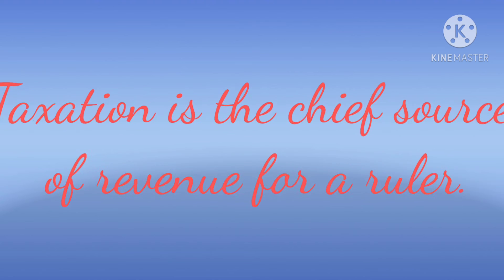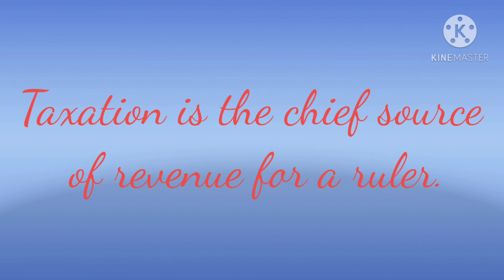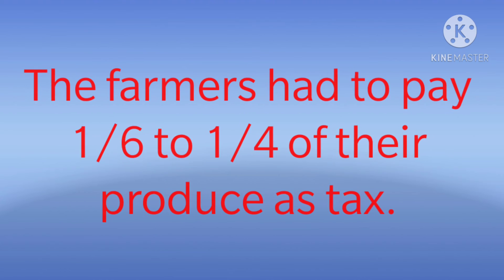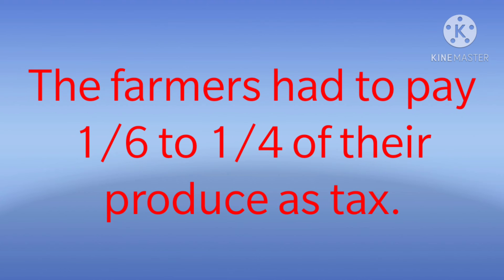Revenue System of the Mauryan Empire. Taxation is the chief source of revenue for a ruler. Land revenue formed the largest part of the tax revenue. The farmers had to pay one-sixth to one-fourth of their produce as tax, in cash or kind.